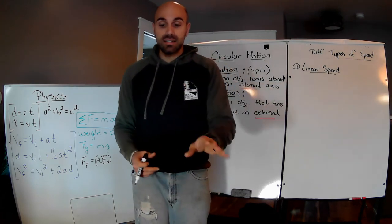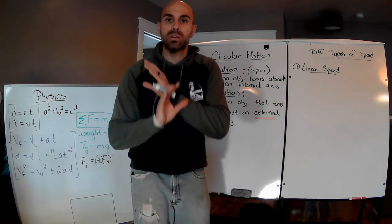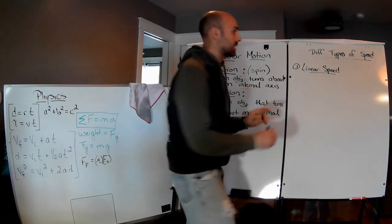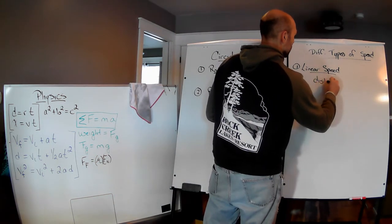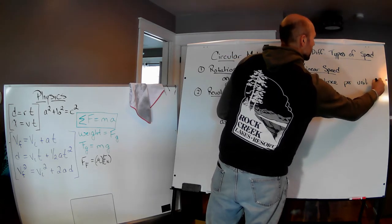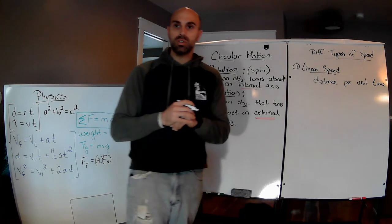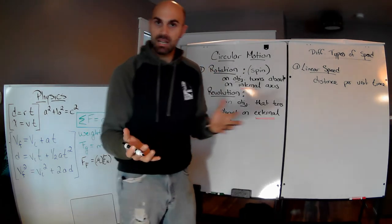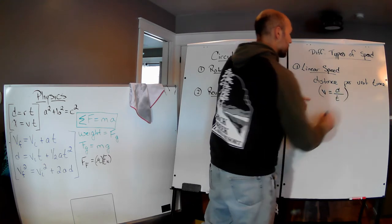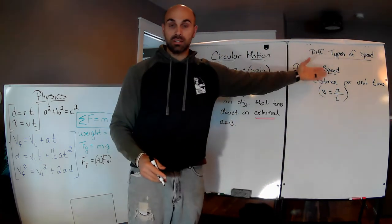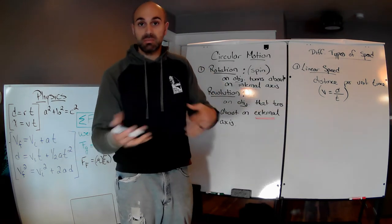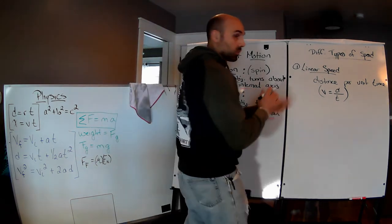Linear speed is the distance per unit time — very straightforward, very simple. Distance per unit time. We know V equals D over T: velocity equals displacement over time. Speed equals distance over time — same idea.